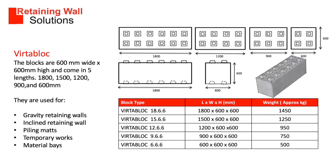We use various types of blocks for building retaining walls. The first is our Inverter Block. The blocks are 600mm wide by 600mm high and come in five lengths: 1800, 1500, 1200, 900 and 600mm. They are used for gravity retaining walls, inclined retaining walls, piling mats, temporary works and material bays.